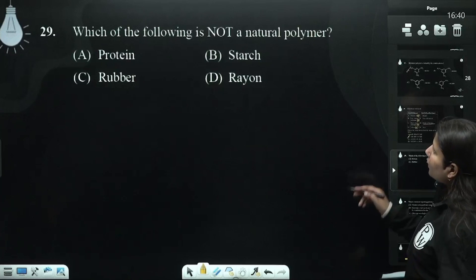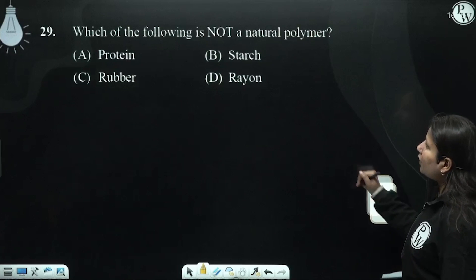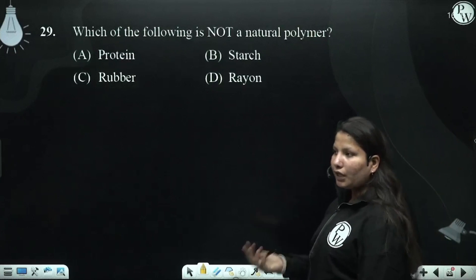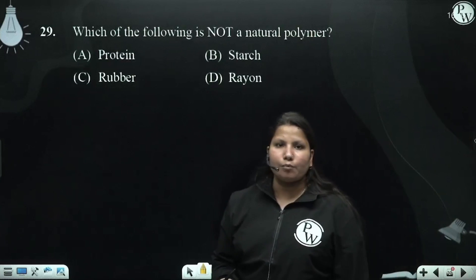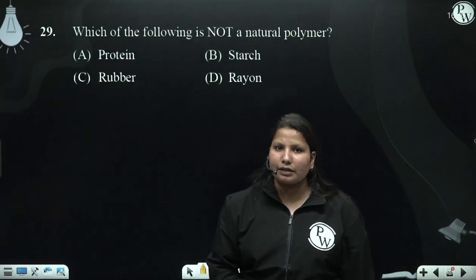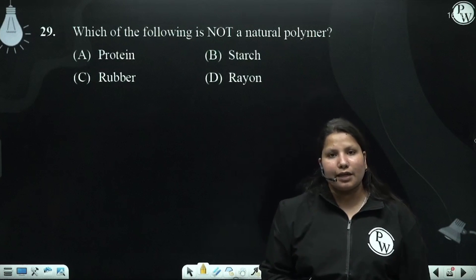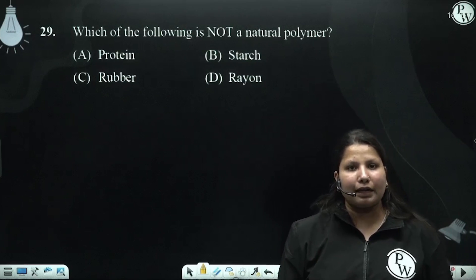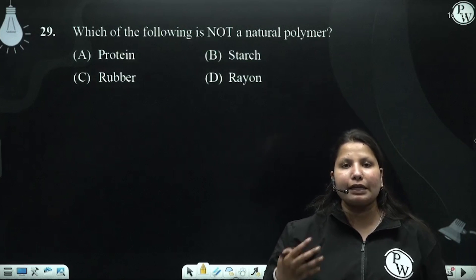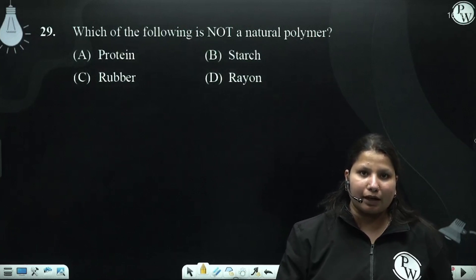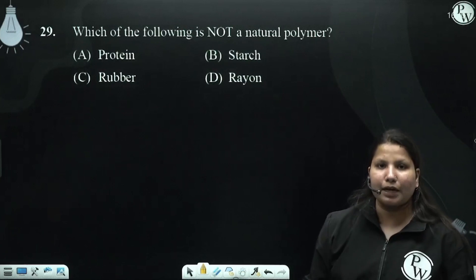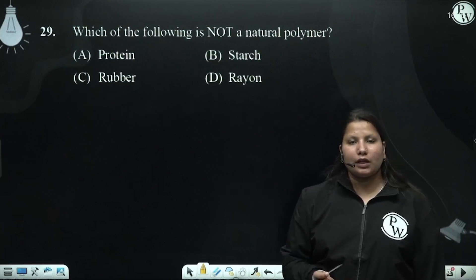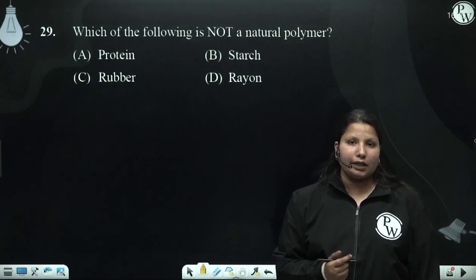Which of the following is not a natural polymer? Proteins are bio-polymers used in the body. Our hair, our skin — all these are made of proteins.